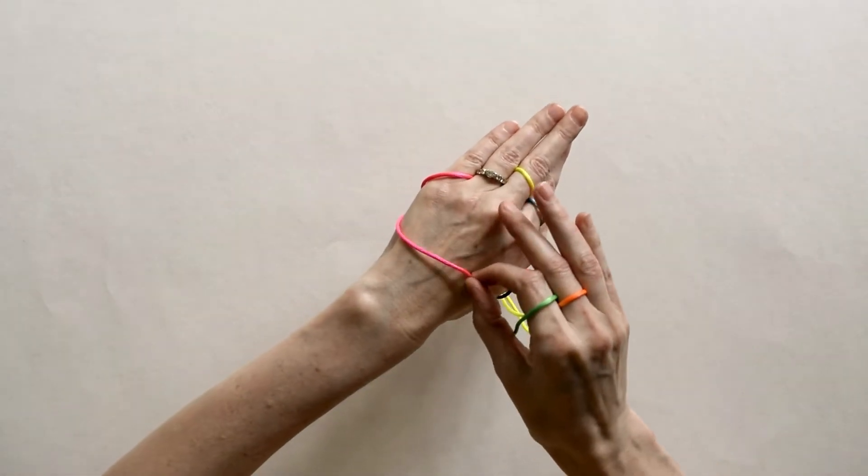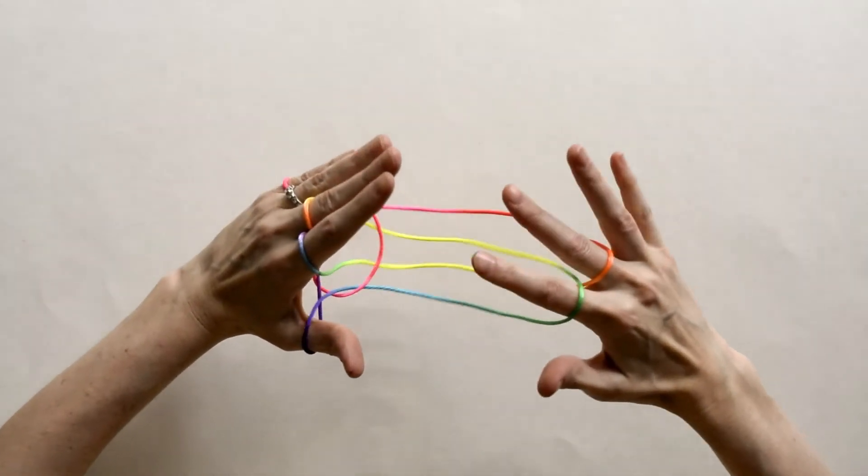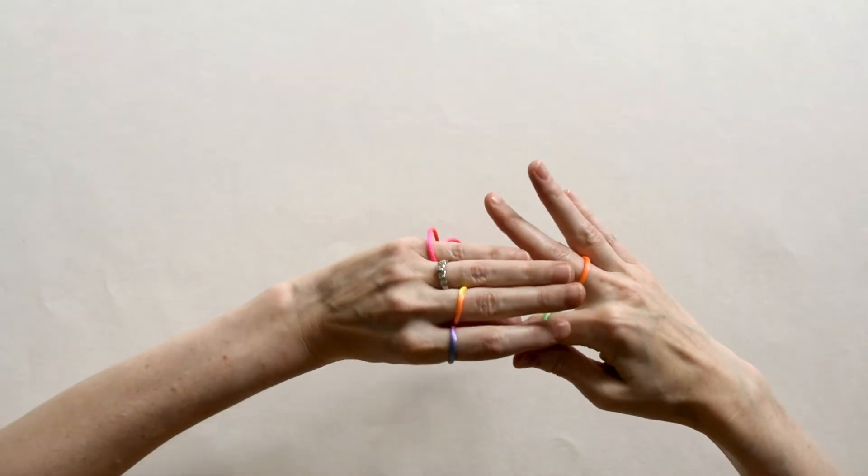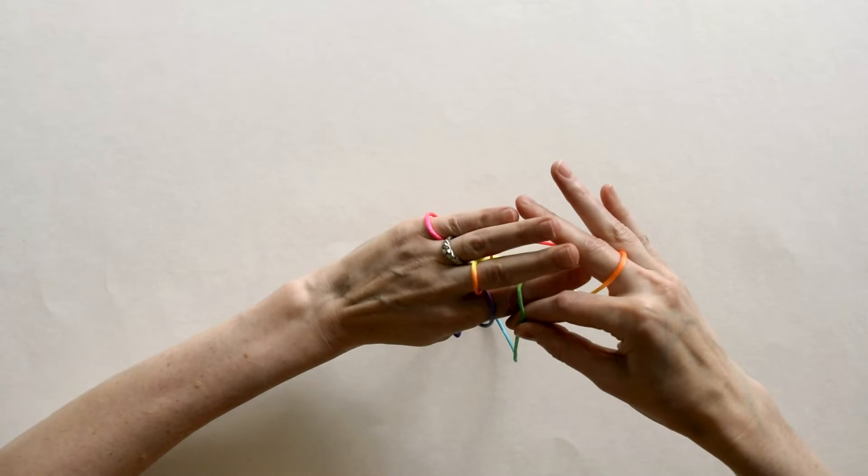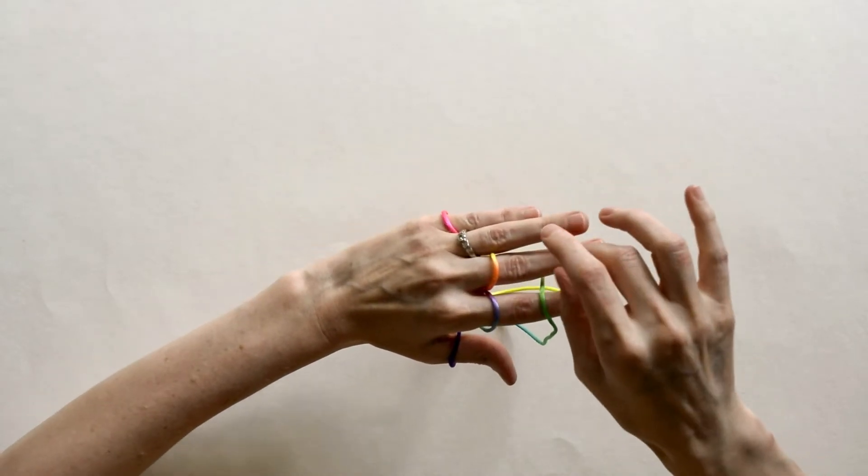Next, take that wrist loop off of your hand. Now take your right hand, you're going to transfer those loops to your left index and middle. So transfer it tip to tip and the middle one tip to tip.